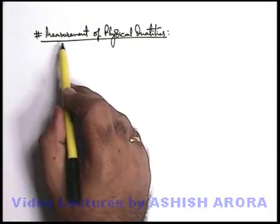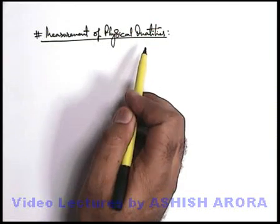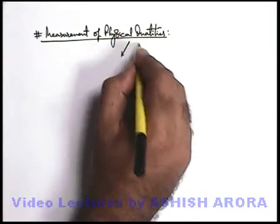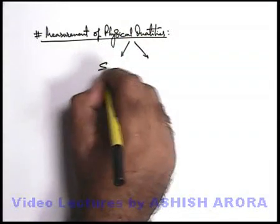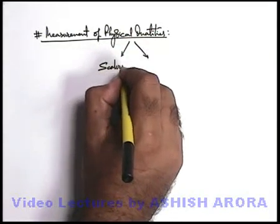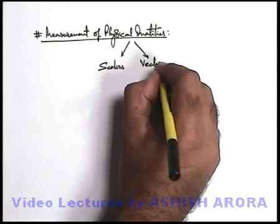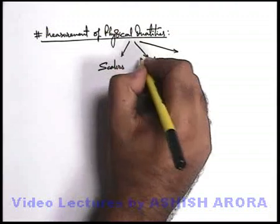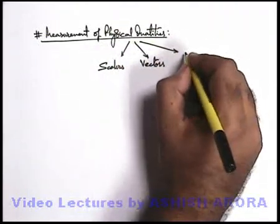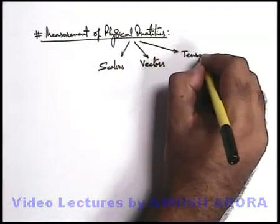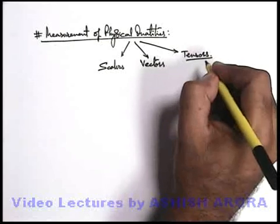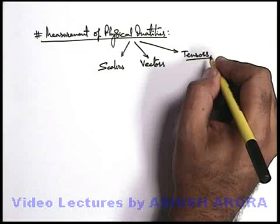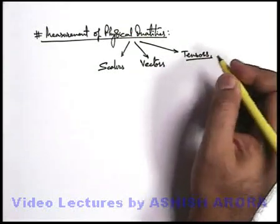So students, let's write something about measurement of physical quantities. As we have discussed, in nature most physical quantities are classified in two ways: scalars and vectors. There is one more category under which physical quantities can also be kept — these are tensors. Right now we are not going to discuss anything about tensors; we'll study tensors in detail when you deal with advanced physics.